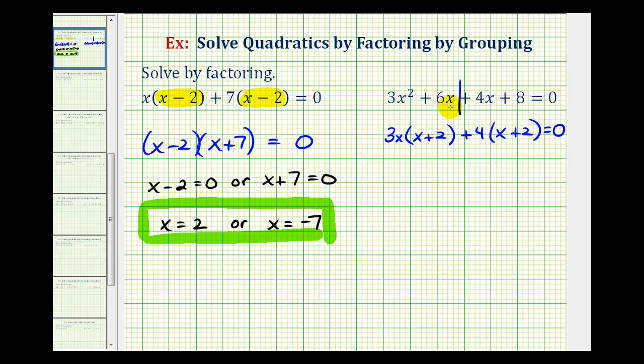Again, this is good news because notice how these two products do contain a common factor of x plus 2, and now we'll factor out the common binomial factor. So if we factor out x plus 2, notice how we're left with the quantity 3x plus 4.